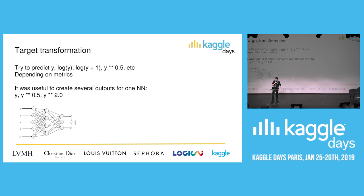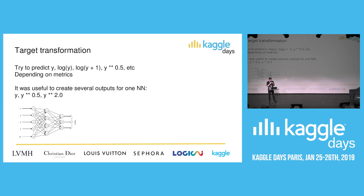Now let's talk about target transformation. You all know what to do if the metric is not MSE but MSLE: you take the logarithm of the target, build usual machine learning models, and then apply the inverse transformation. But once it was useful to create a non-trivial solution — to create several outputs for one neural network. One output was just Y, the next was Y square-rooted, and the next was Y squared. It really helps — it acts as a kind of regularization.